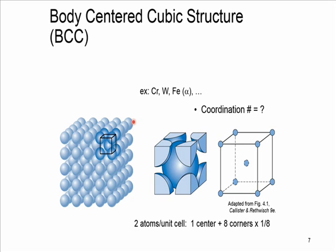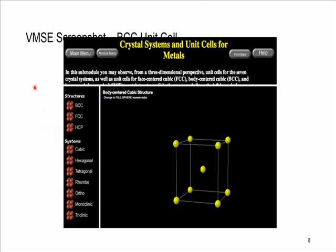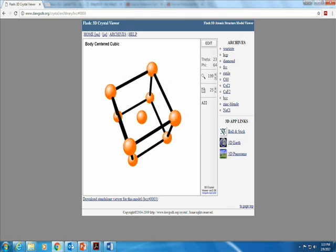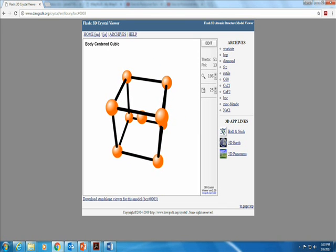The coordination number of BCC can be proved to equal 8. The number of atoms per unit cell: the 8 corner atoms each contribute 1/8, giving 1, plus 1 atom in the center, for a total of 2 atoms per unit cell. To visualize this we can use Wiley Plus Flash or an open free website, where you can see the BCC structure, rotate it, change the size and viewing angle.